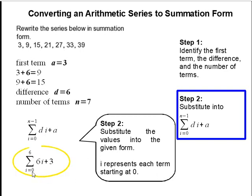And we can just do a simple test here. If I substitute 0 in for i, that's going to get me 0 plus 3, and that's our first term. And let's say i is 1. So 6 times 1 is 6 plus 3, that gets me 9. So it corresponds to our series.